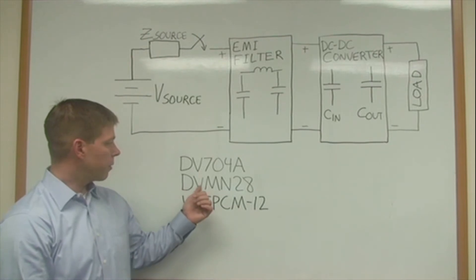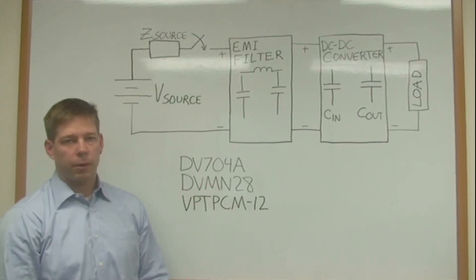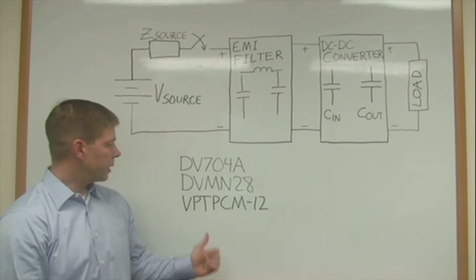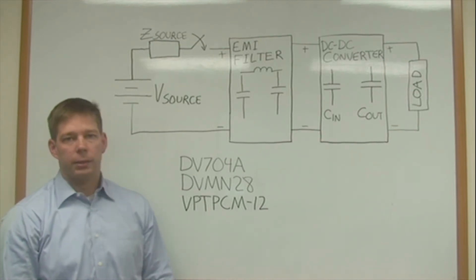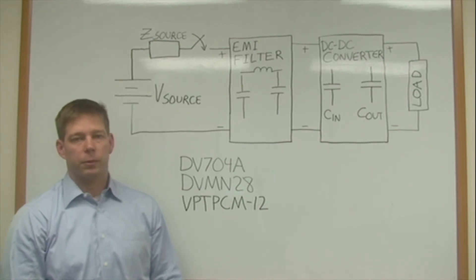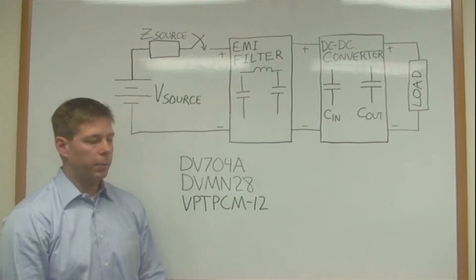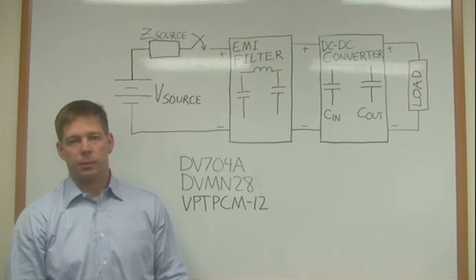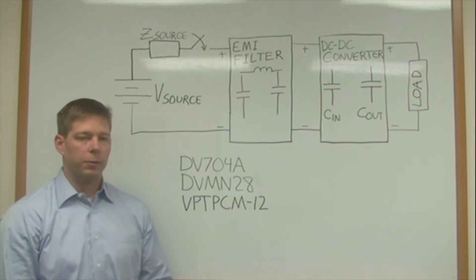This DV704A is a 2 amp EMI filter with integrated inrush current limiting. DVMN28 is a 14 amp EMI filter with integrated inrush current limiting. And the VPT PCM is a preconditioning module that does not have an EMI filter but does offer inrush current limiting.